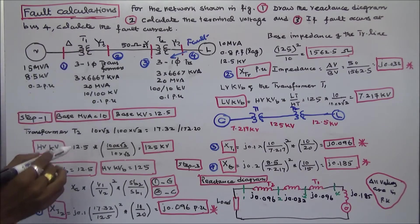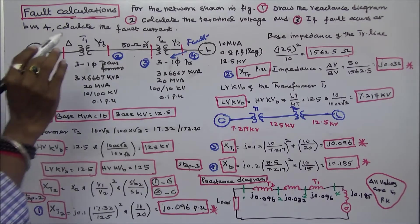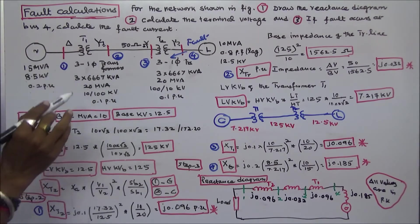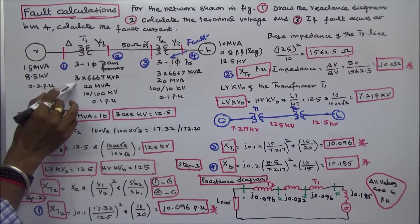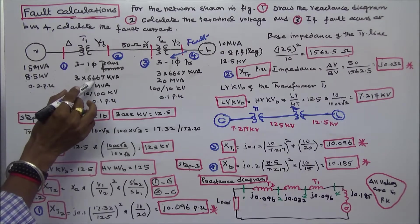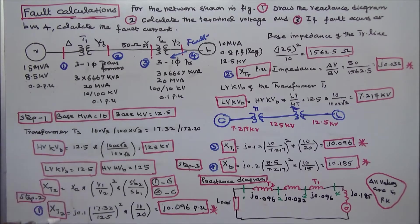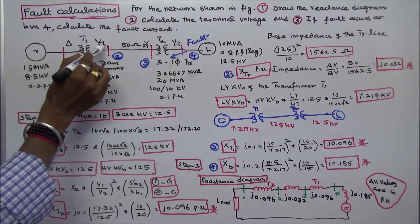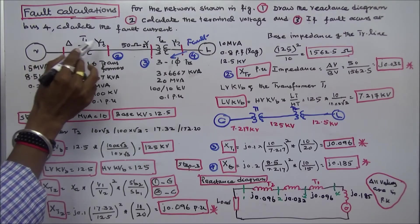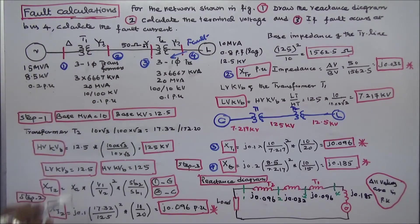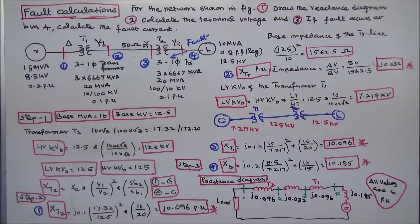Transformer 1 consists of three single-phase transformers. Each transformer rating is 6,667 kVA; three times 6,667 kVA equals 20 MVA. This side is delta connected, this side is star connected. This voltage is 10 kV on the delta side and 100 kV on the star side. Reactance of the transformer is 0.1 per unit.